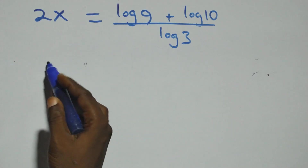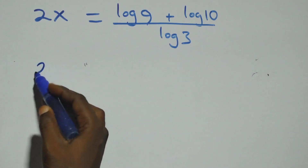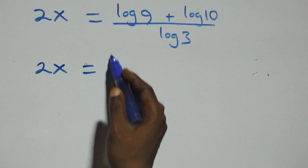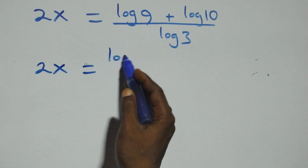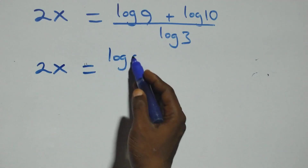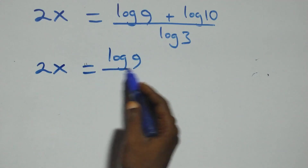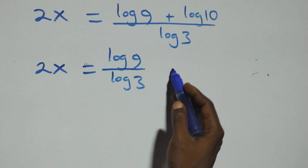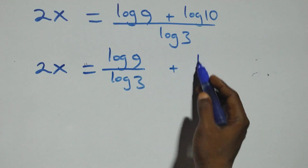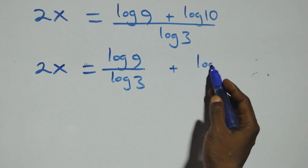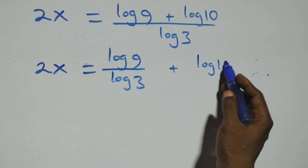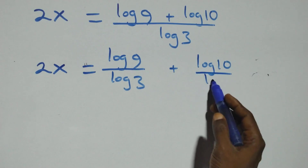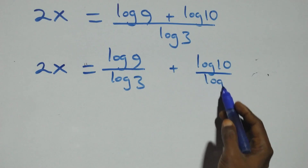We separate this into two fractions and we have 2x equals log 9 over log 3 plus log 10 over log 3.